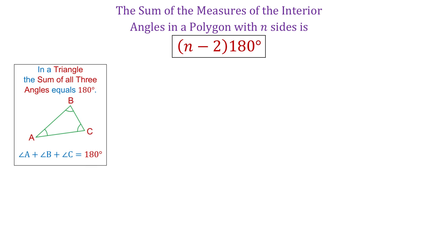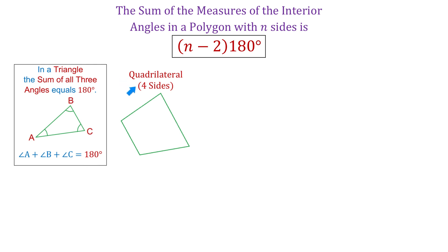Next, we need to know that we can split a polygon into triangles by drawing diagonals from the same vertex. For example, a quadrilateral has four sides. If from one vertex we draw a diagonal, this quadrilateral will be divided into two triangles.